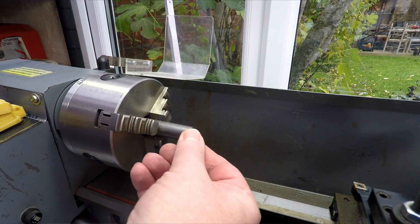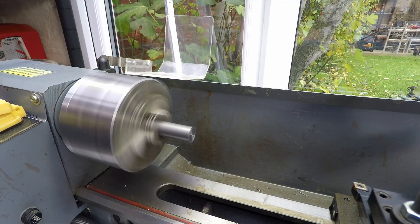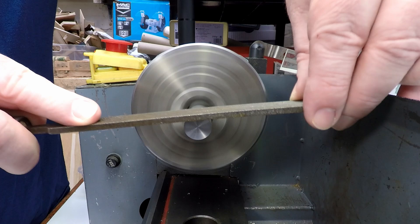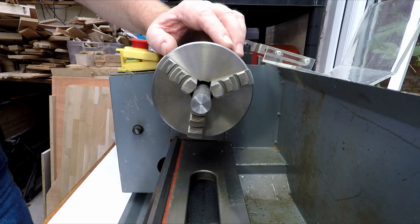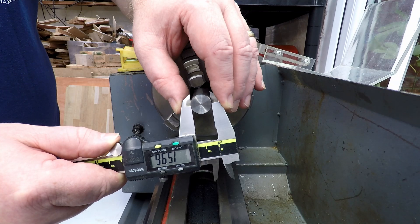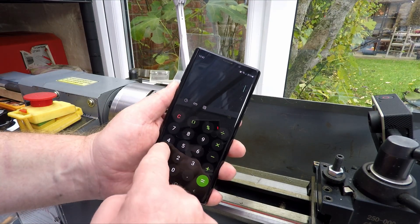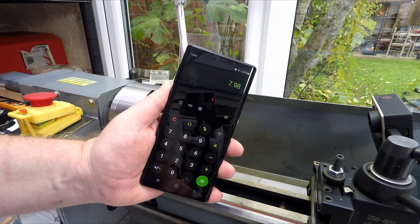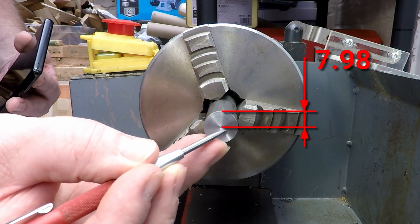Before we do that, we want to make sure there aren't any burrs on the end of the bar that will disturb our measurements. I'll quickly knock any burrs off the end. Once we've deburred the end, we'll come in with our calipers and take a measurement of the diameter. Although we know it's 16mm bar, I'm getting 15.96mm. We'll take half of that: 15.96 × 0.5 = 7.98mm.